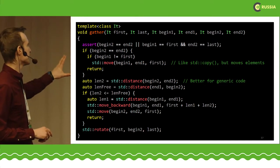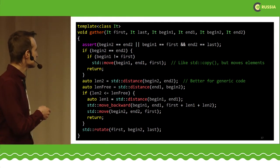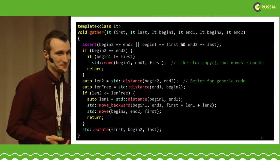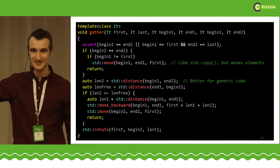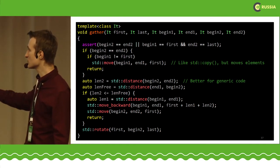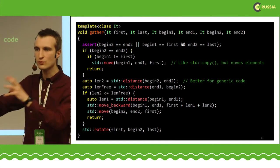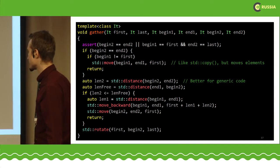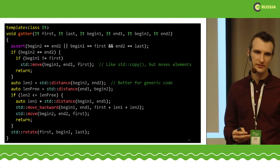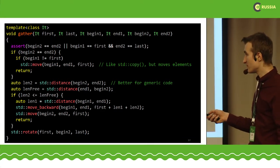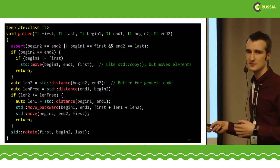A few interesting notes about the implementation: 'std::move' here is the algorithm, not the cast — it moves elements to a destination just as std::copy does but moving instead of copying. Since we're using ints in our test data, copy and move are equivalent, but we use move to emphasize that we don't care about what's left behind. Note the use of 'std::distance', which works for bidirectional iterators, giving us support for std::list for free.